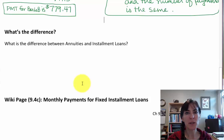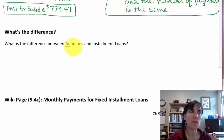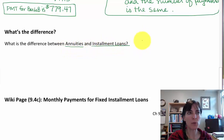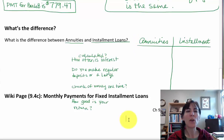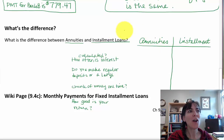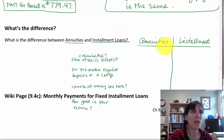We'd like to look at the difference between annuities and installment loans because they might seem pretty similar. So let's talk about what's different. Our questions — how often is interest calculated? For both annuities and installment loans, it's monthly.